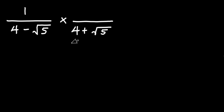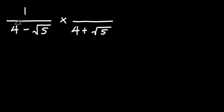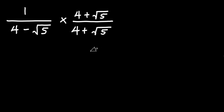Don't forget that we are talking about fractions here. Whatever you do to the denominator side you must do the exact same thing on the numerator side. So if I have multiplied this by 4 plus root 5, I have to also multiply the numerator by the exact same thing.